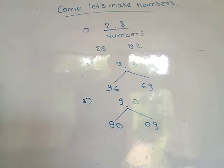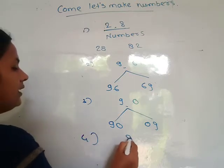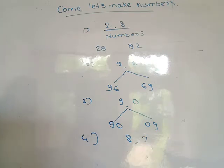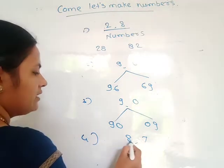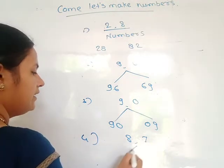The next example: digits 8 and 7 are given. By using these two digits you write the numbers — the first one is 87 and the second one is 78.